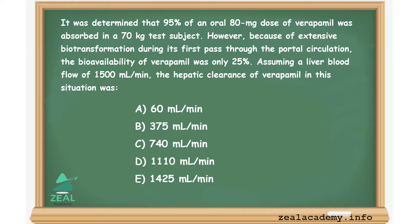Hepatic clearance is the volume of plasma containing drug that is cleared by the liver per unit time. It is usually measured indirectly as a difference between the total body clearance and the renal clearance. Hepatic clearance can also be calculated as a product of the liver blood flow Q and the extraction ratio ER. The extraction ratio is the fraction of drug irreversibly removed by an organ or tissue as plasma containing drug perfuses that tissue.